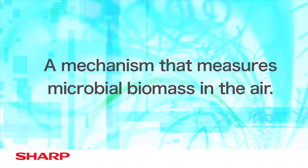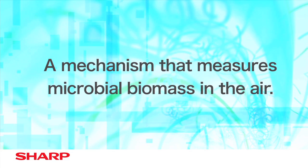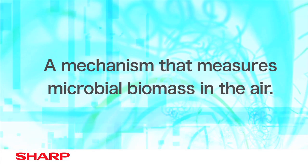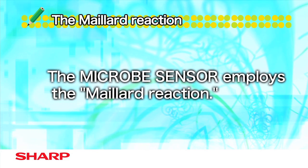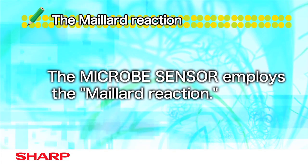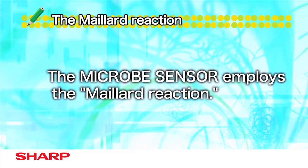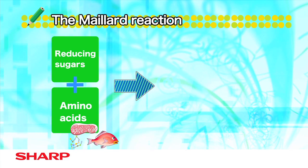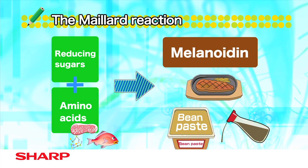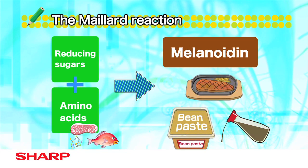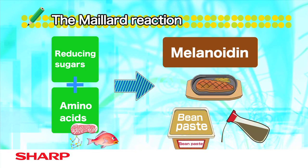Now I'll explain the mechanism of measuring the microbial biomass in the air. The microbe sensor applies the Maillard reaction to readily measure the microbial biomass in a short time. The Maillard reaction is a reaction that creates a brown substance, melanoidin, by heating a reducing sugar and an amino acid such as protein.